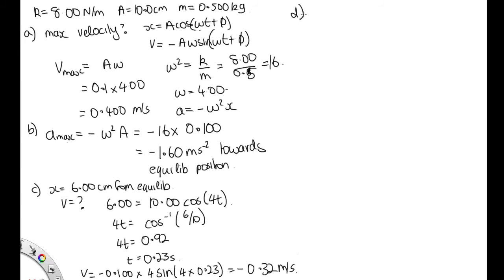Part D. We were then asked to calculate the acceleration. So the acceleration is equal to minus omega squared x. We already have x, it's 6 centimeters. So this is equal to minus 16 times 0.06, and solving that on the calculator, minus 0.96 meters per second per second.